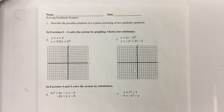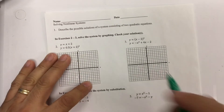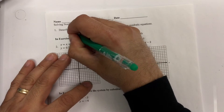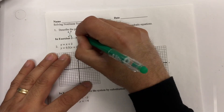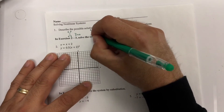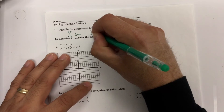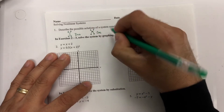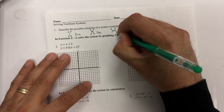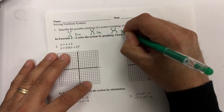This is the answer key from last night's homework. It says: describe the possible solutions of a system consisting of two quadratic equations. The first case is where one parabola faces up and one faces down and they don't intersect — that's zero solutions. You can also have them touch at the vertices, giving one solution. The last case is where they intersect at two points, which gives two solutions.